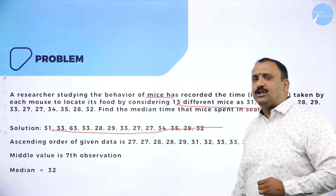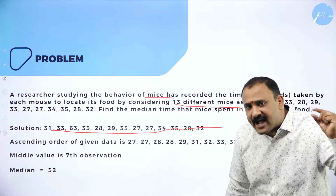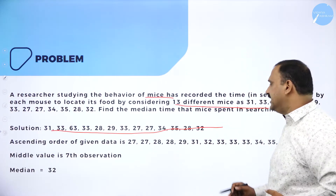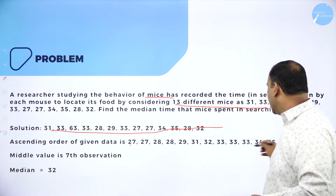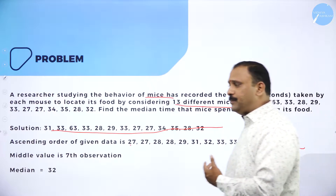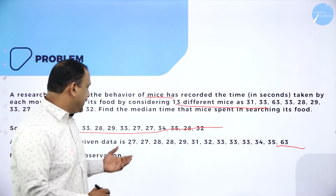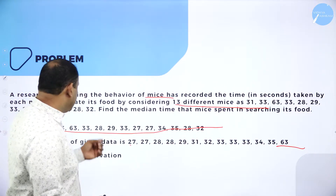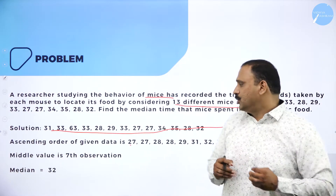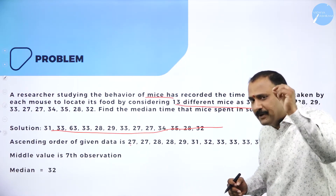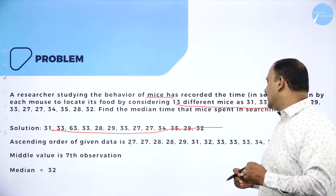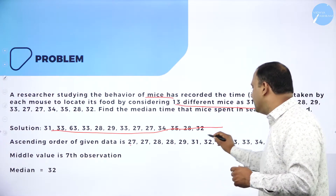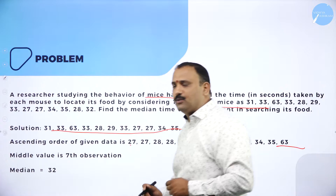The first thing you need to do is arrange the entire data in ascending order. I have arranged the data starting from 27 all the way to 63. If you have a quick observation, the middle value — the seventh one — is 32. So we are going to take the middle value and proceed further.